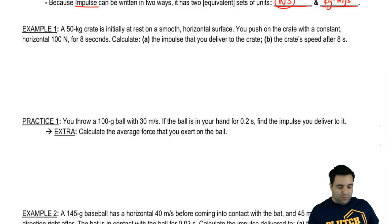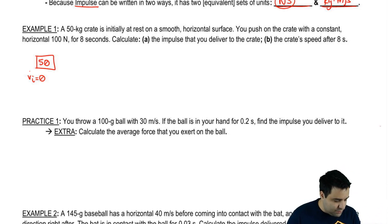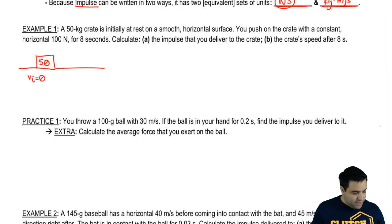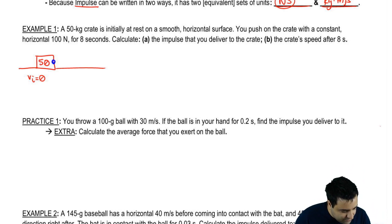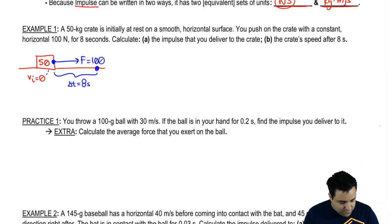So let's do an example here, and then I have a practice problem for you guys. So a 50-kilogram crate is initially at rest. Let's draw this. 50-kilogram crate initially at rest on a smooth, no friction, horizontal surface. And then you push on it with a constant, horizontal 100 newtons. 100 newtons is a force. It's a constant force, and it's a horizontal force. F = 100. For eight seconds. So I'm going to say that it goes from here to here. And the time between these two points is eight seconds. So here the initial velocity is zero. Here there's some sort of final velocity, which is what we want in part B. What is the final velocity?